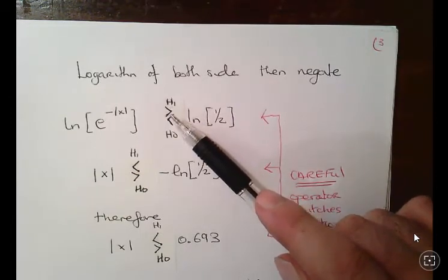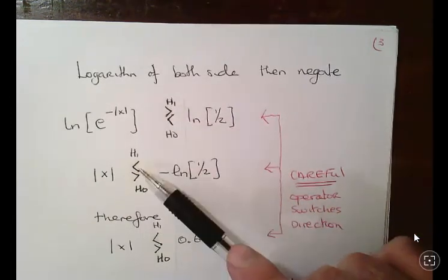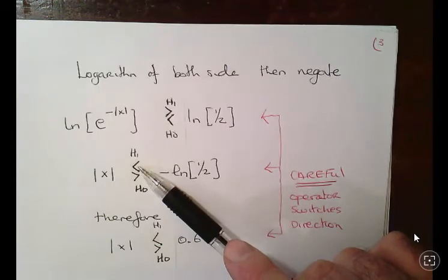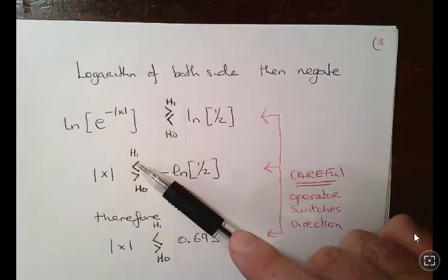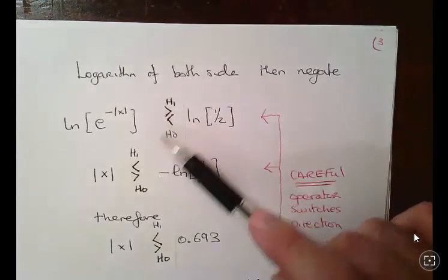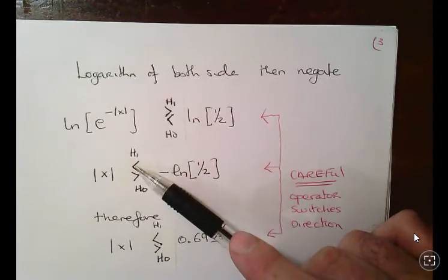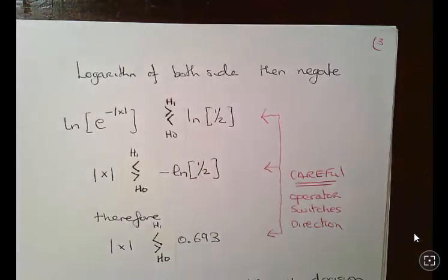If it's less than the threshold, it's H1. So this is very important, it's very hard to pick up. This decision operator can change direction and it does change direction here because we change the signs.